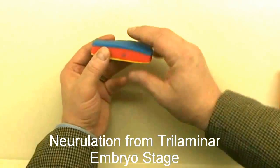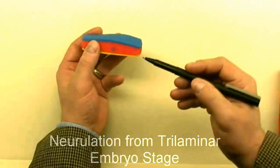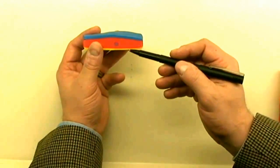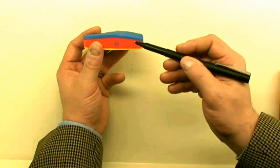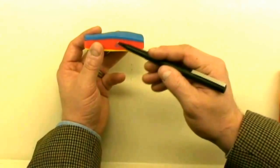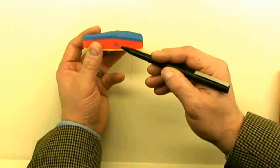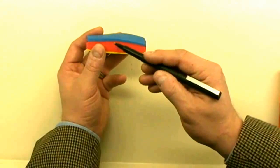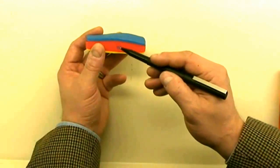We've reached the point of the trilaminar embryo: ectoderm, mesoderm, and endoderm—blue, red, yellow—all controlled by signals from the little purple notochord located right here.